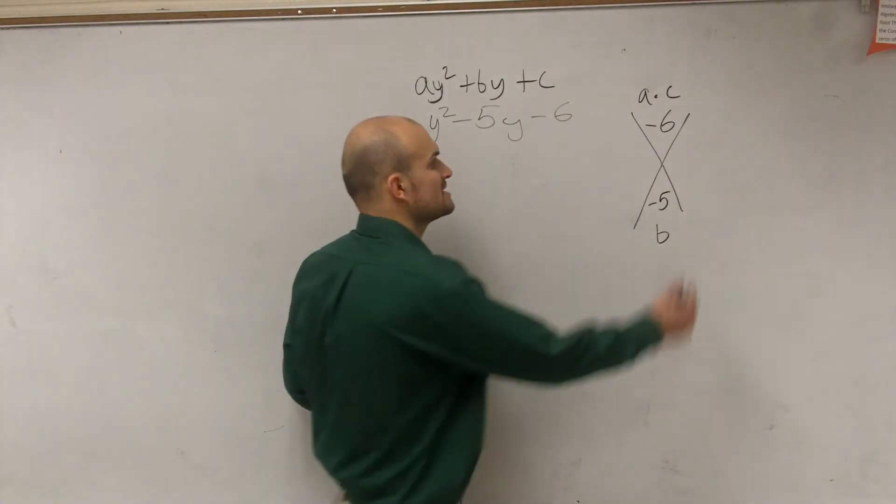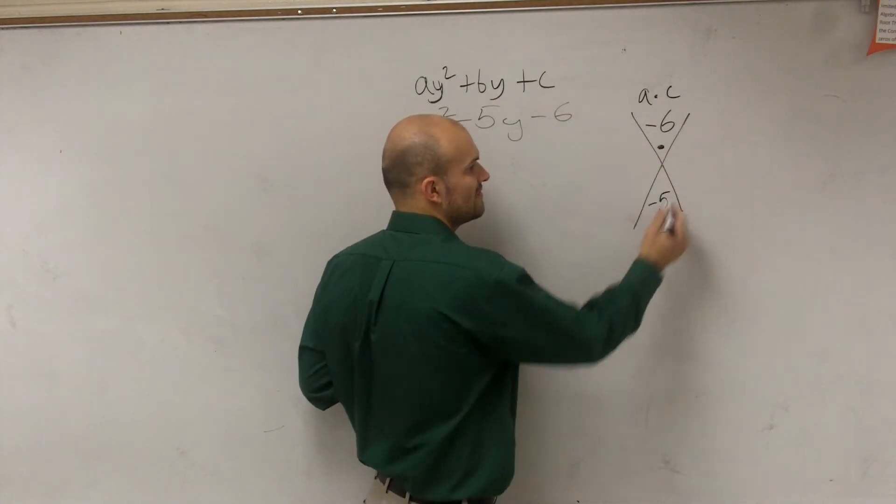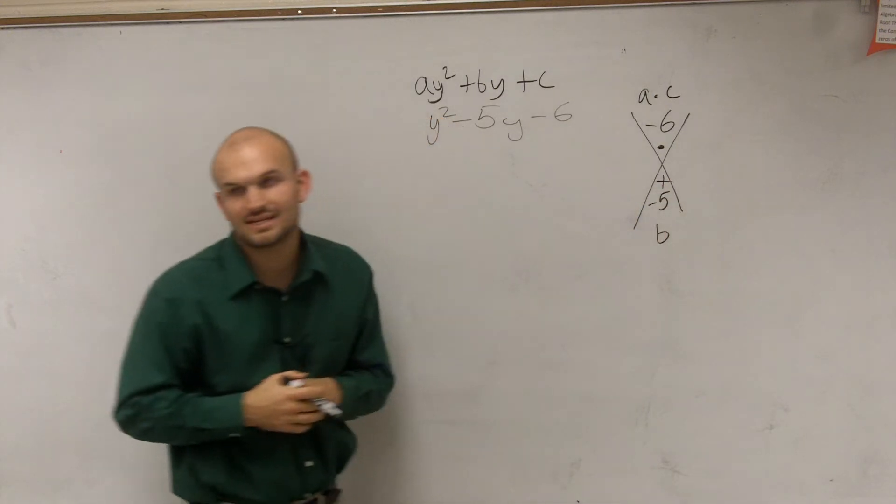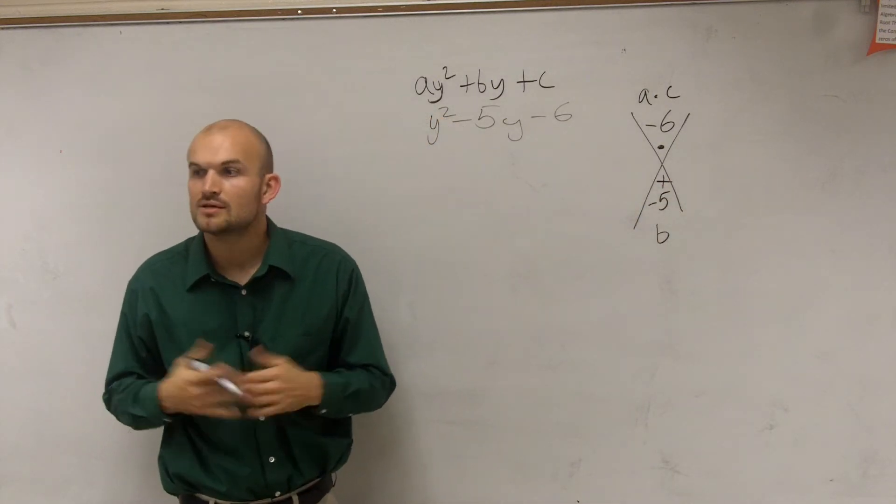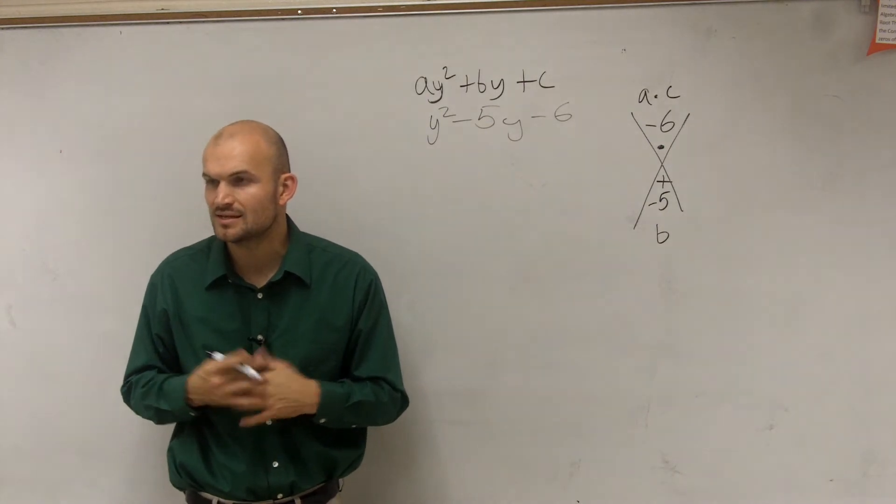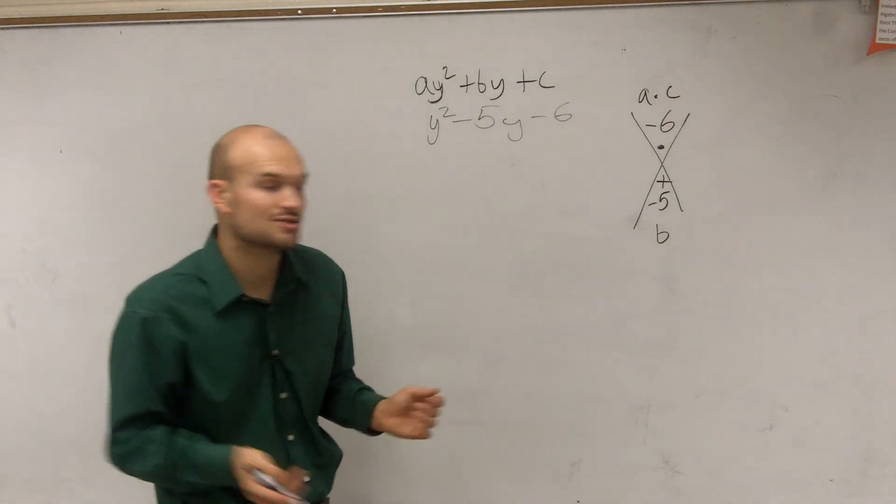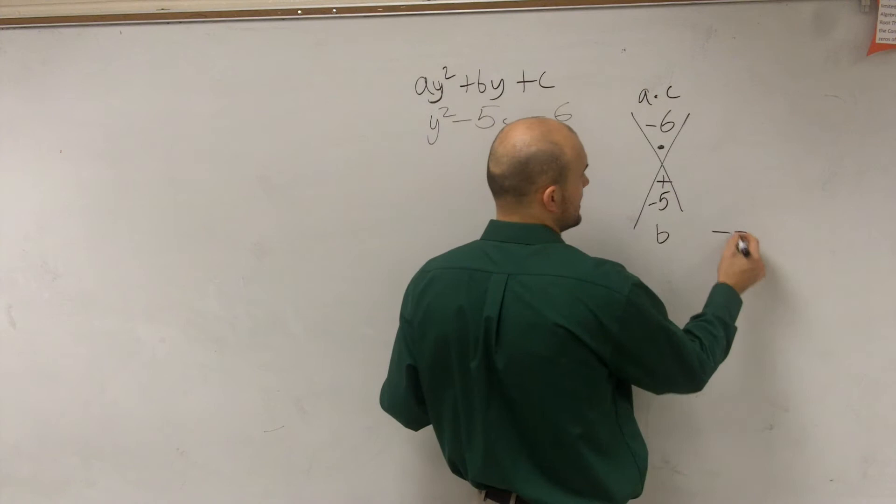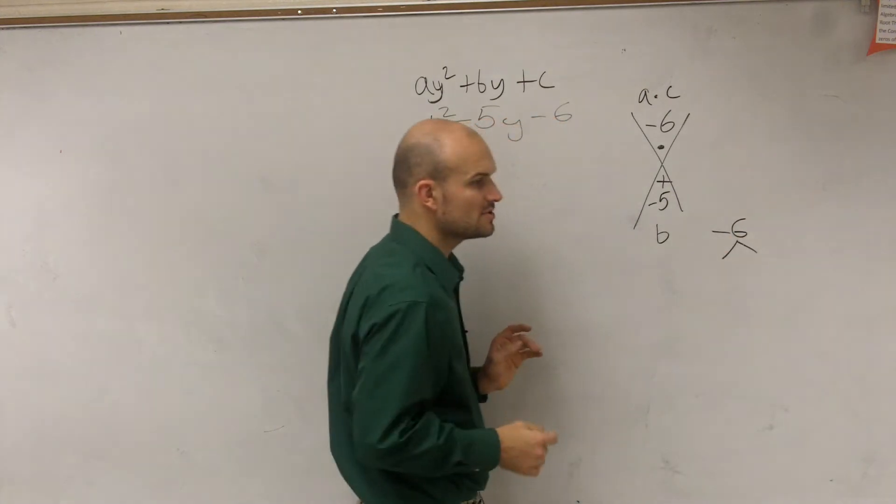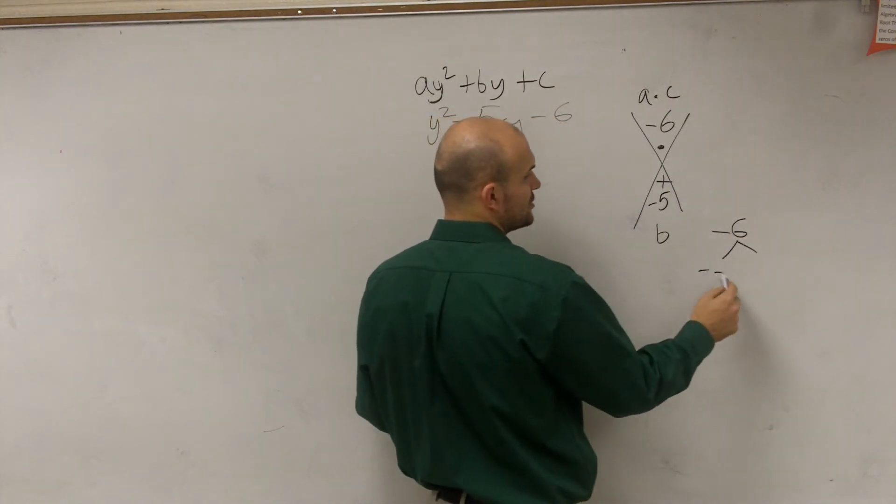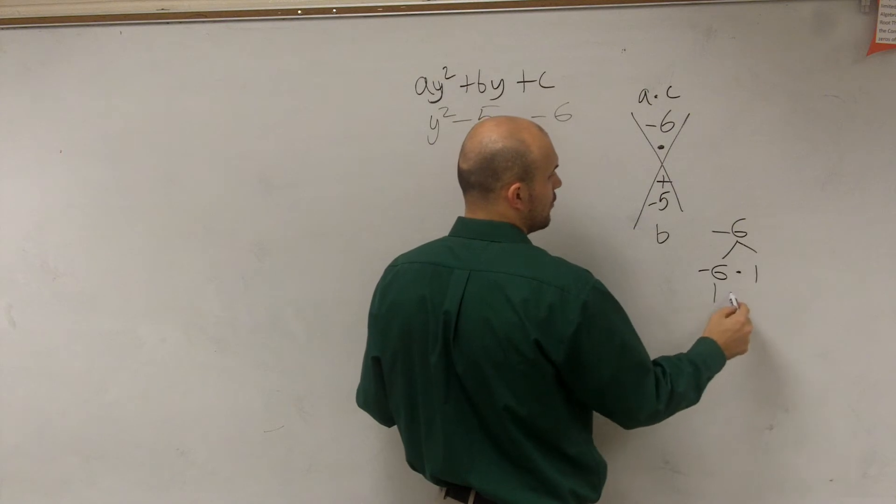So now what we're going to do is we're going to say what two numbers multiply to give us negative 6 and add to give us negative 5. So how do we figure out what two numbers multiply to give us negative 6, but add to give us negative 5? To do that, we can factor negative 6. So what two numbers multiply to give us negative 6? You could do negative 6 times 1.